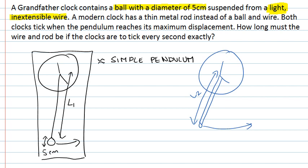On the other hand when we consider our funky modern clock, this has a rod instead of a ball and wire. So the rod can't be considered as massless and it can't be considered as having all of its mass at a point at the end. So in this case we can't approximate this system as a simple pendulum. We have to consider it as a physical pendulum.